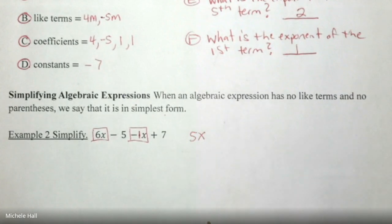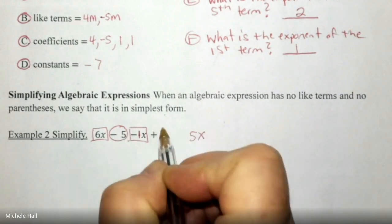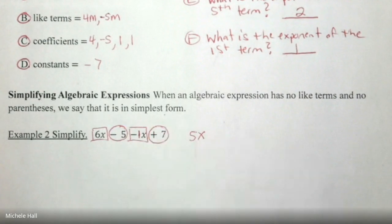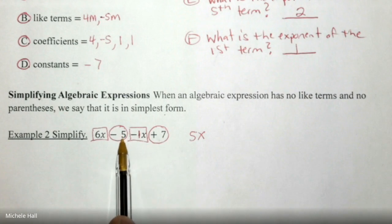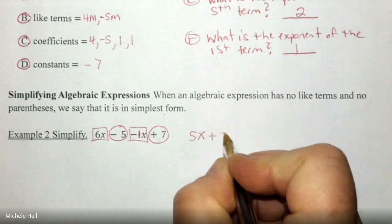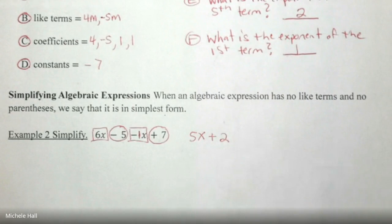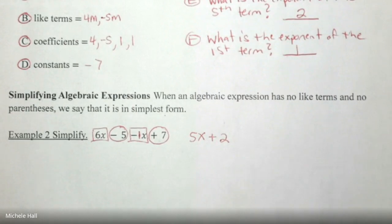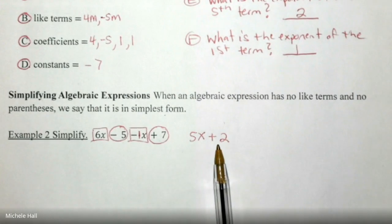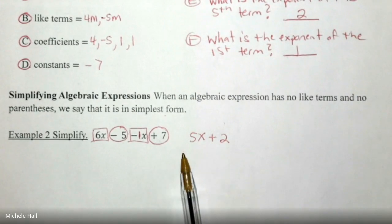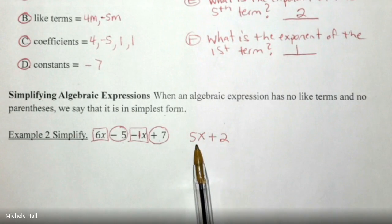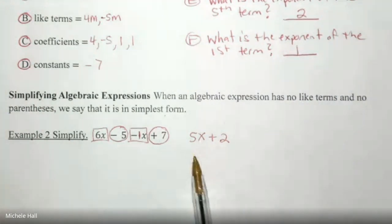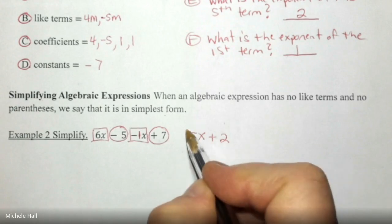And then I have some constants. Negative 5, positive 7. Negative 5 plus 7 or 7 minus 5 would be a positive 2. When you're simplifying your algebraic expressions, make sure that you are putting the variables first and the constant at the end. You also have to make sure if you have more than one variable, if I had an x term and a y term, I need to go alphabetical order and then my constant is at the end. Here is my final answer. I cannot add 5x plus 2.